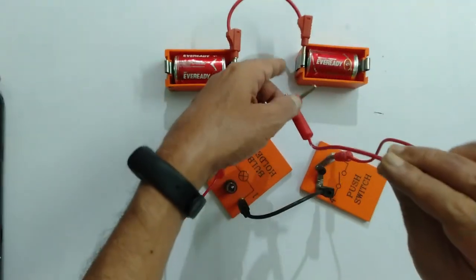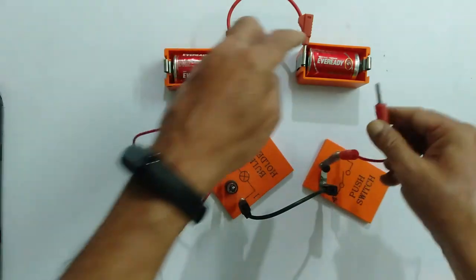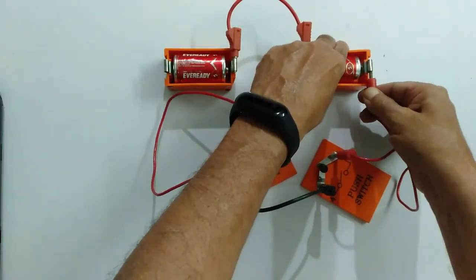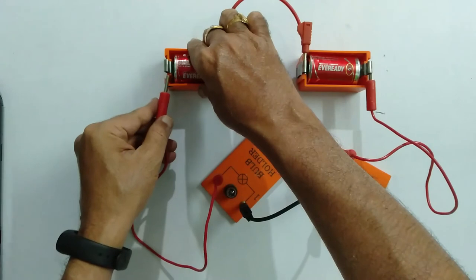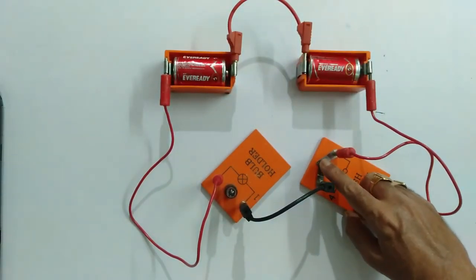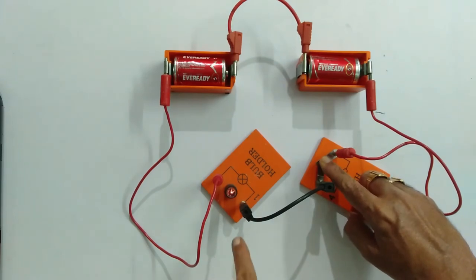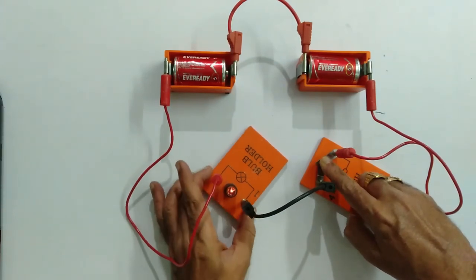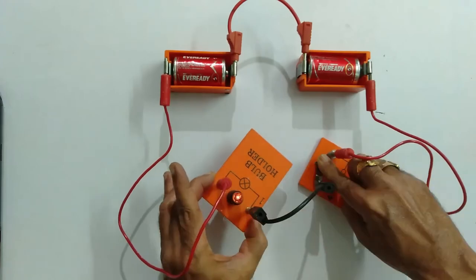Now, once again, we will verify by connecting these cells in the circuit. I'll push it again. You will see that the bulb is glowed.